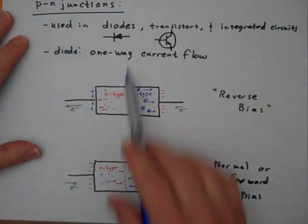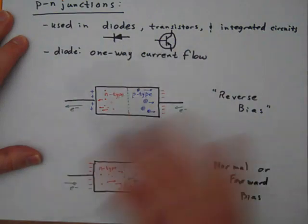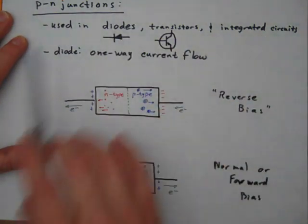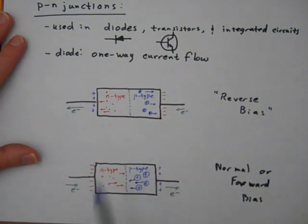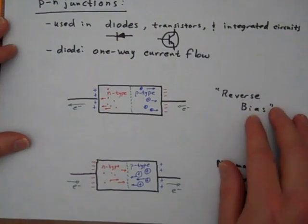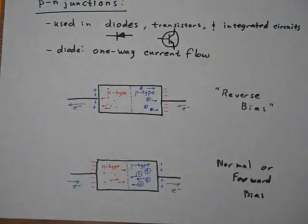These are used in a lot of important electronic components like diodes or transistors, and these are the schematic symbols for them, and things called integrated circuits. So let's just pick one of these: a diode. A diode is an important electrical component that allows for only one-way current flow. So current can flow one direction but not the other direction, and that's useful in the construction of some kinds of circuits.